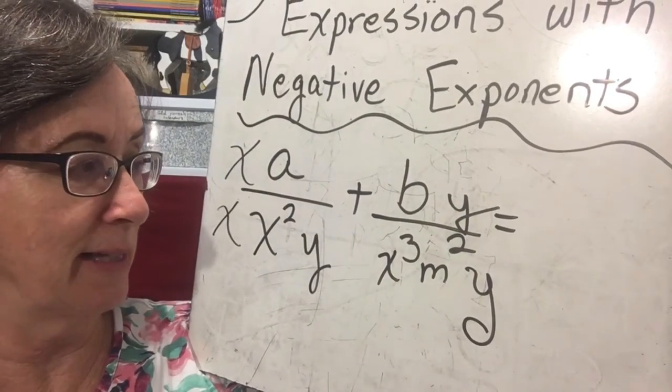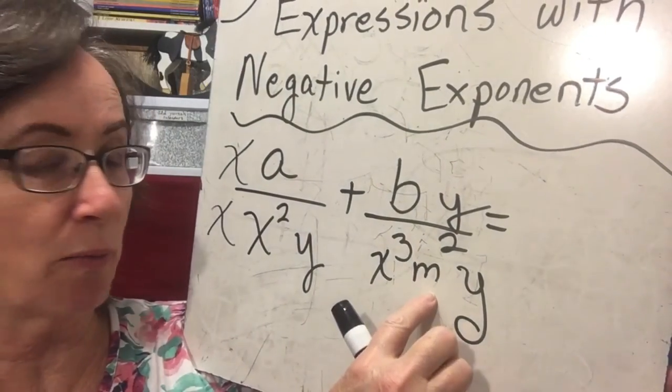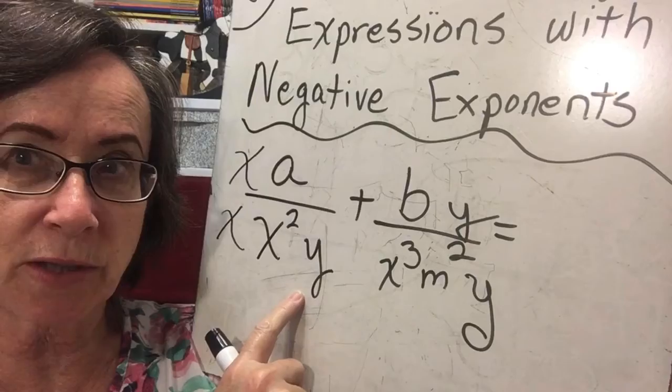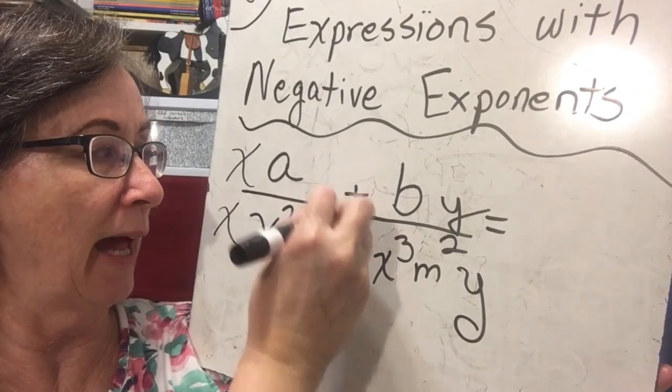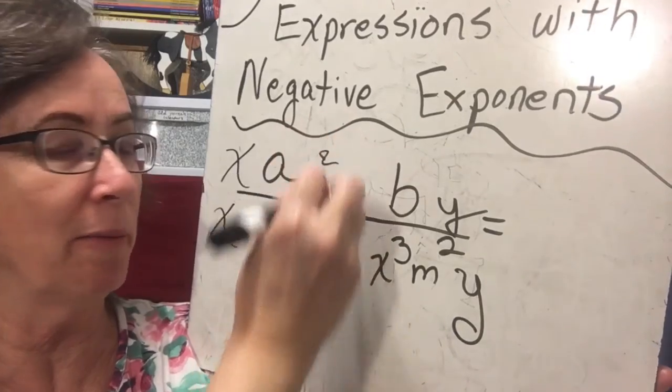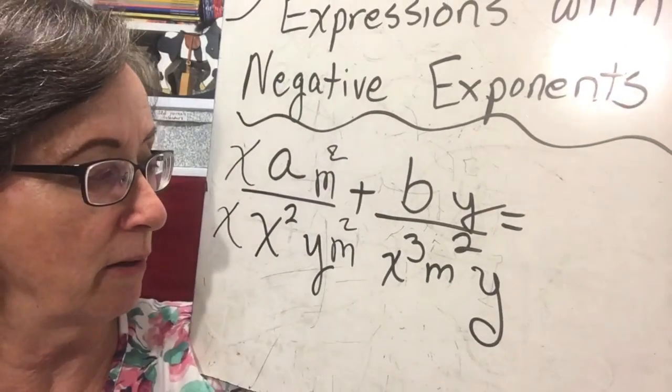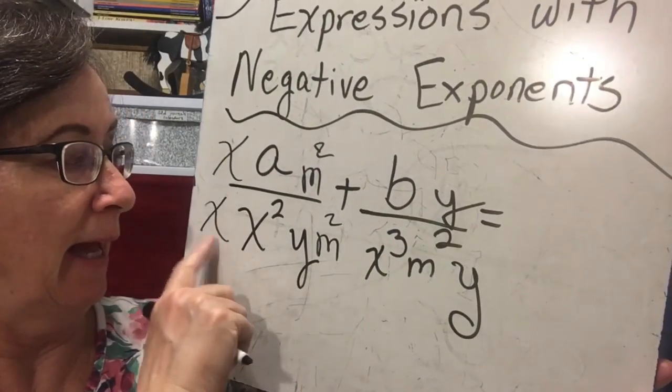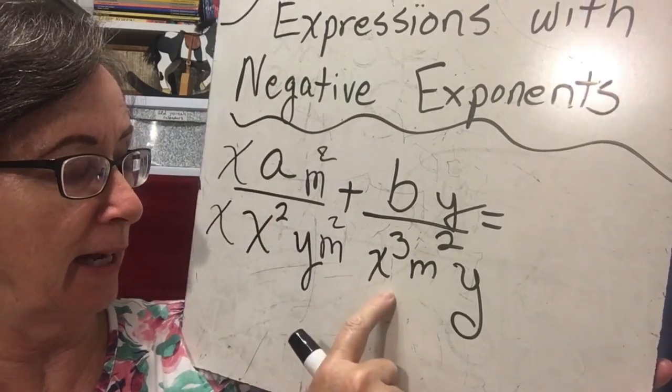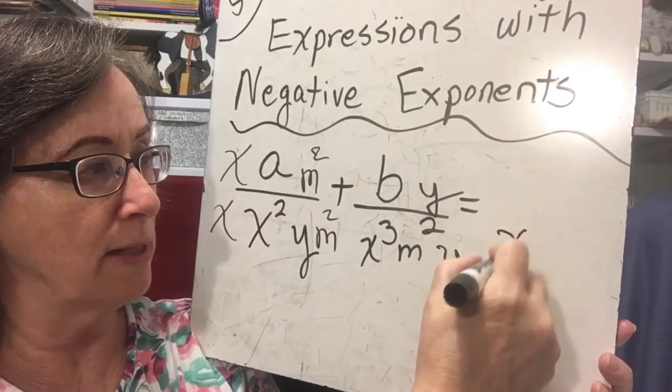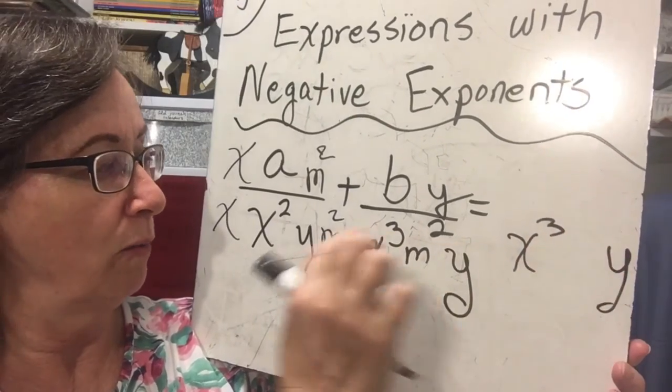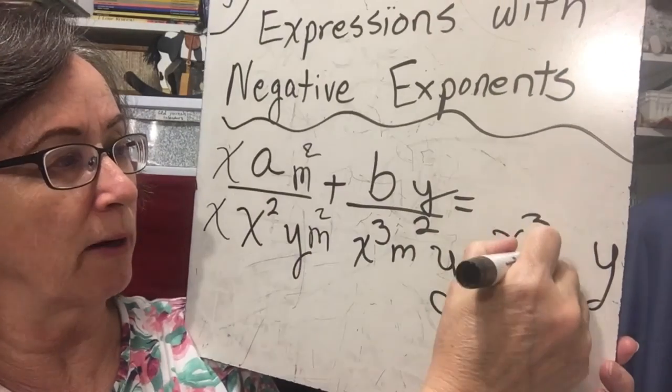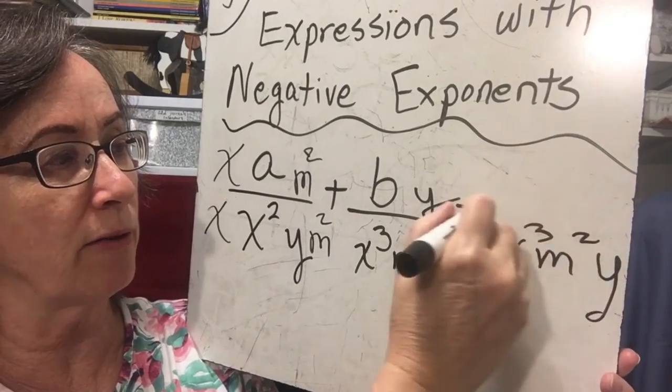And they're still not the same yet because I have an m squared over here, but no m squared over here. So I'm going to multiply the numerator and the denominator by m squared. Now we look. We've got x, x squared, and an x cubed. Those are the same. We've got a y and a y. We've got an m squared and an m squared. So now our denominators are the same.